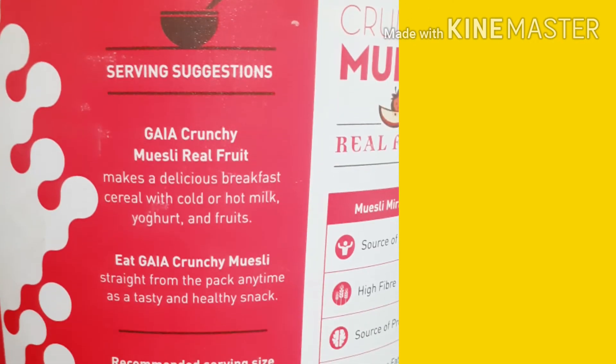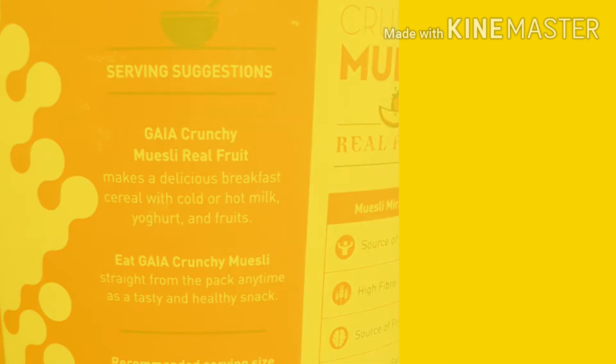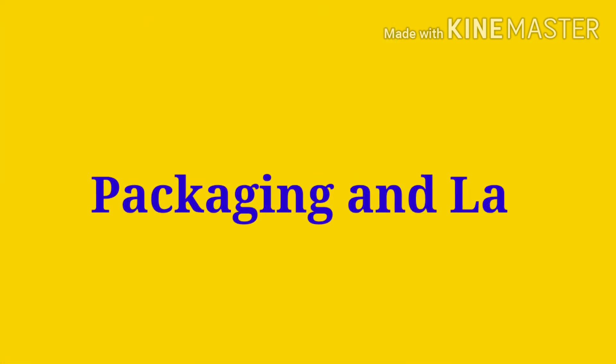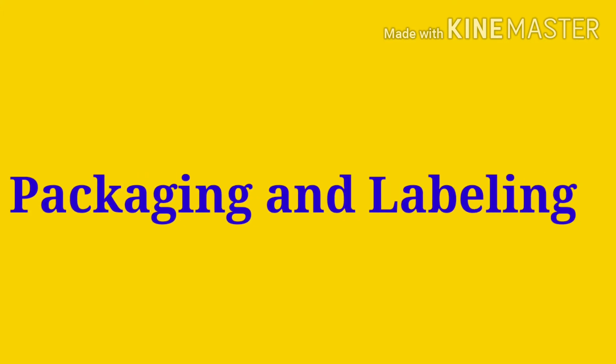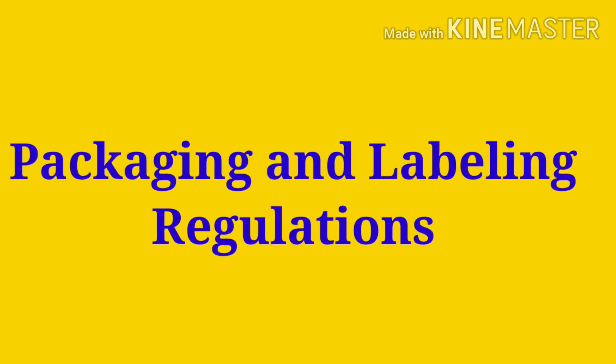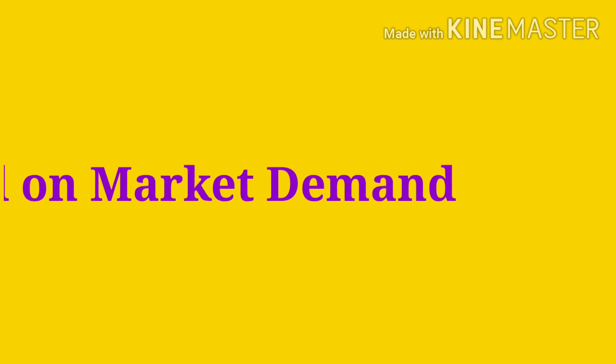For these labels there are certain standards set by FSSAI, based on which every food commodity should be labeled — specifically FSSAI's packaging and labeling regulations. Labels should be either in English or any regional language depending on market demand, and they should also be clear so that one can easily read them.